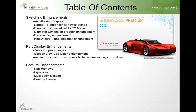Some enhancements for SolidWorks 2012 with regard to part display include changes to how zebra stripes function. Previously, zebra stripes placed your part in the middle of a cube room or spherical room with stripes on the walls, creating singularities at the poles of the sphere or corners of the cube. Now in 2012, zebra stripes can be horizontal or vertical depending on your choice, and they've added the ability to select an image as the environment.